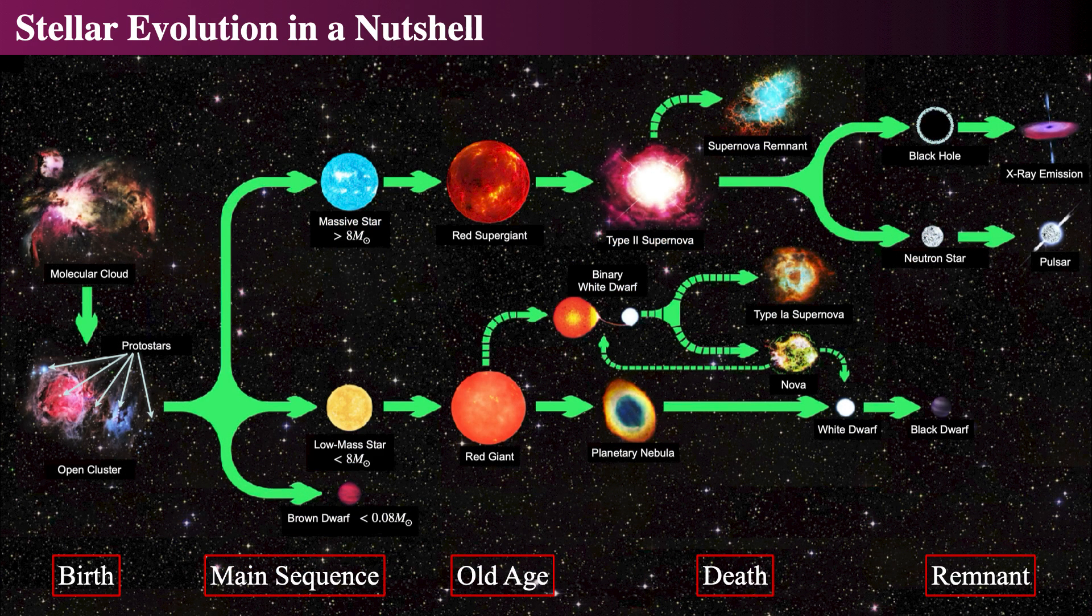The remnants of such explosions are either neutron stars or black holes, and these are seen as pulsars or X-ray binaries. Obviously, there's quite a few details I've glossed over, but basically every star is born in a cluster, lives a life on the main sequence, runs out of fuel, and dies.